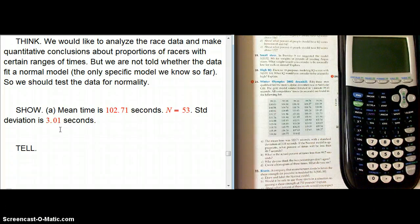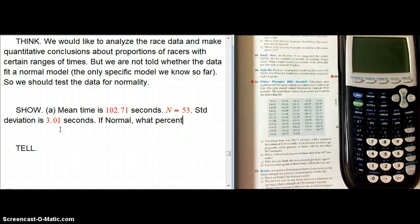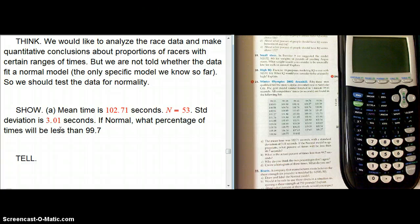And now here's what they ask. Assuming if normal, if it's normally distributed, the normal model is appropriate, then what percentage of times will be, for example, less than 99.7 seconds.